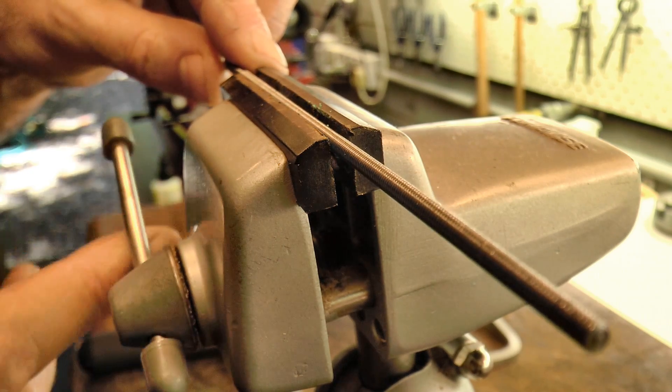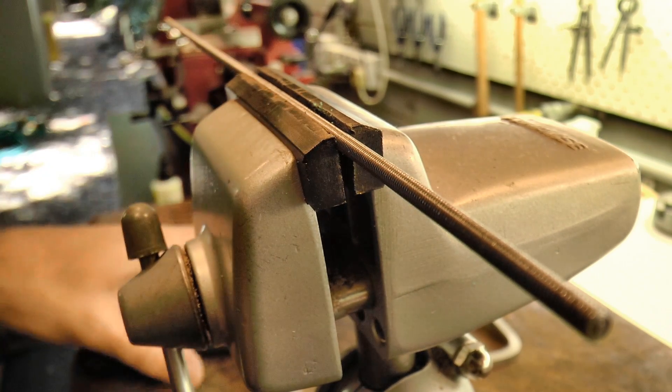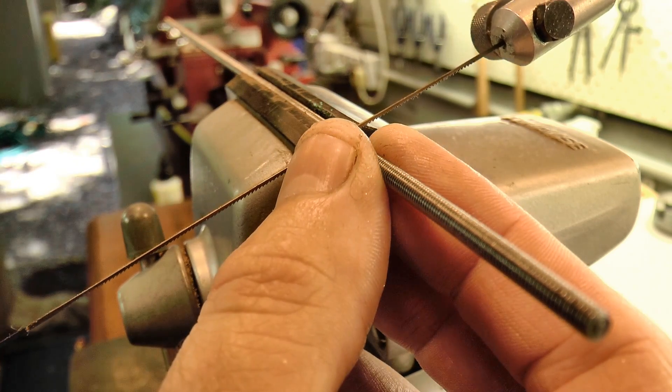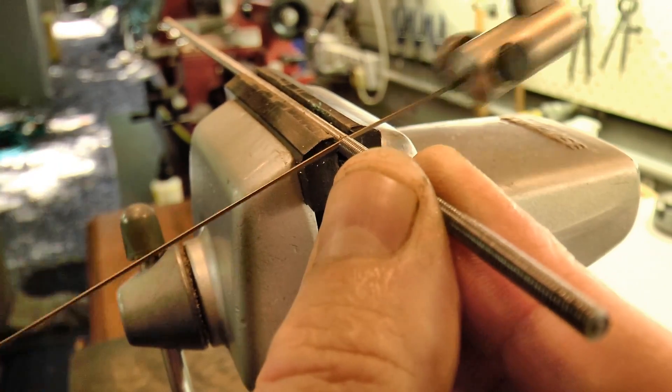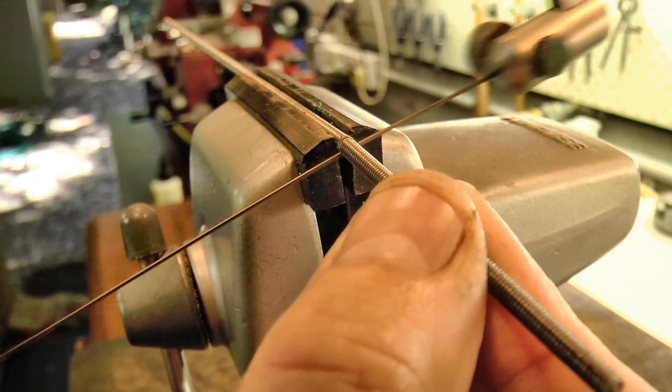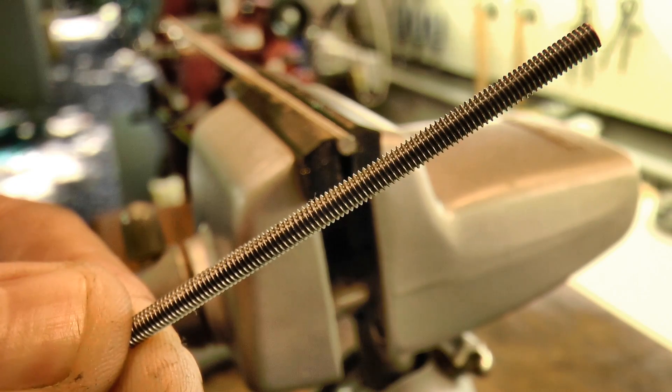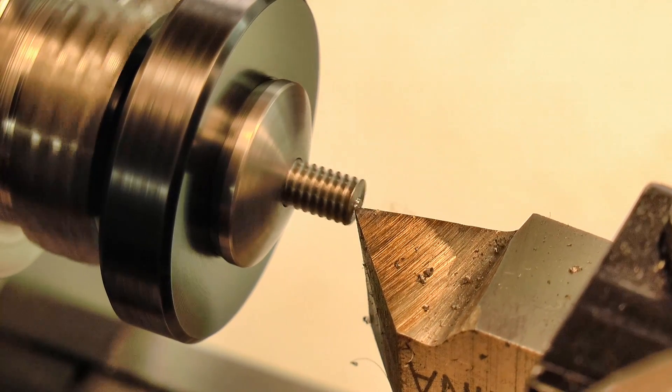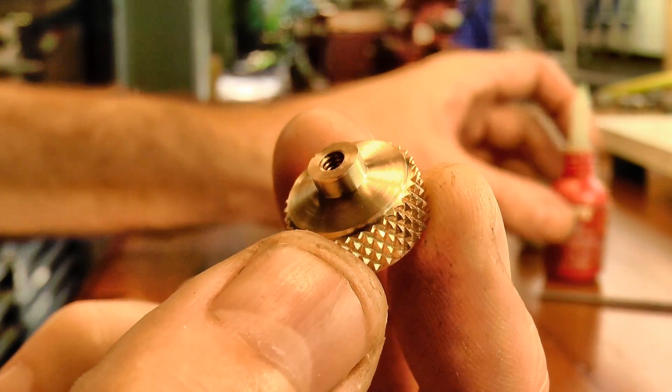The threaded rod is definitely going to save me a lot of time for the shaft, so I cut off a length of that. Tighten up the cut ends on the lathe, and then using a little loctite, bonded the rod into the thumb wheel.